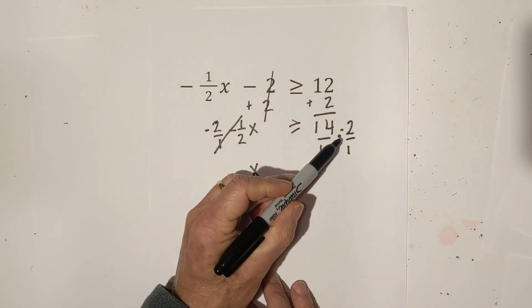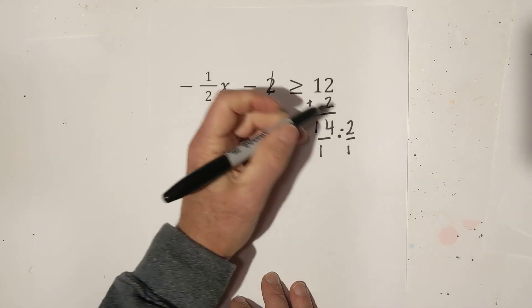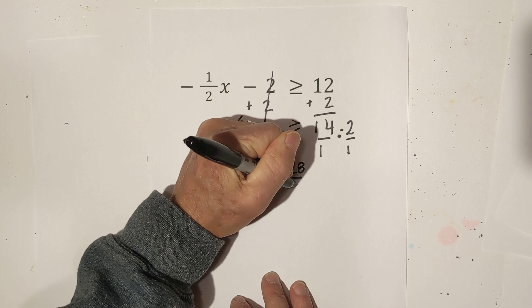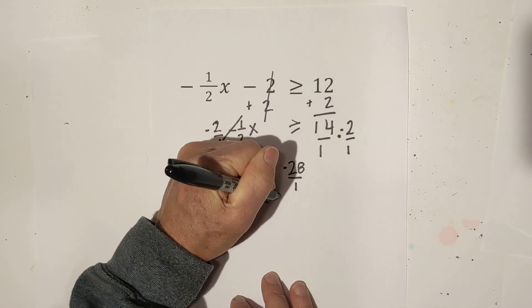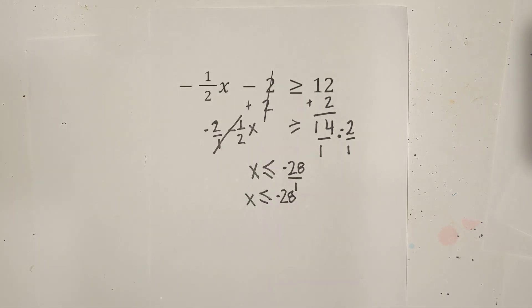We have multiplied by a negative so we're going to flip the signs. 14 times negative 2 is negative 28. 1 times 1 is 1 and you can further reduce that to negative 28. So that's what it becomes.